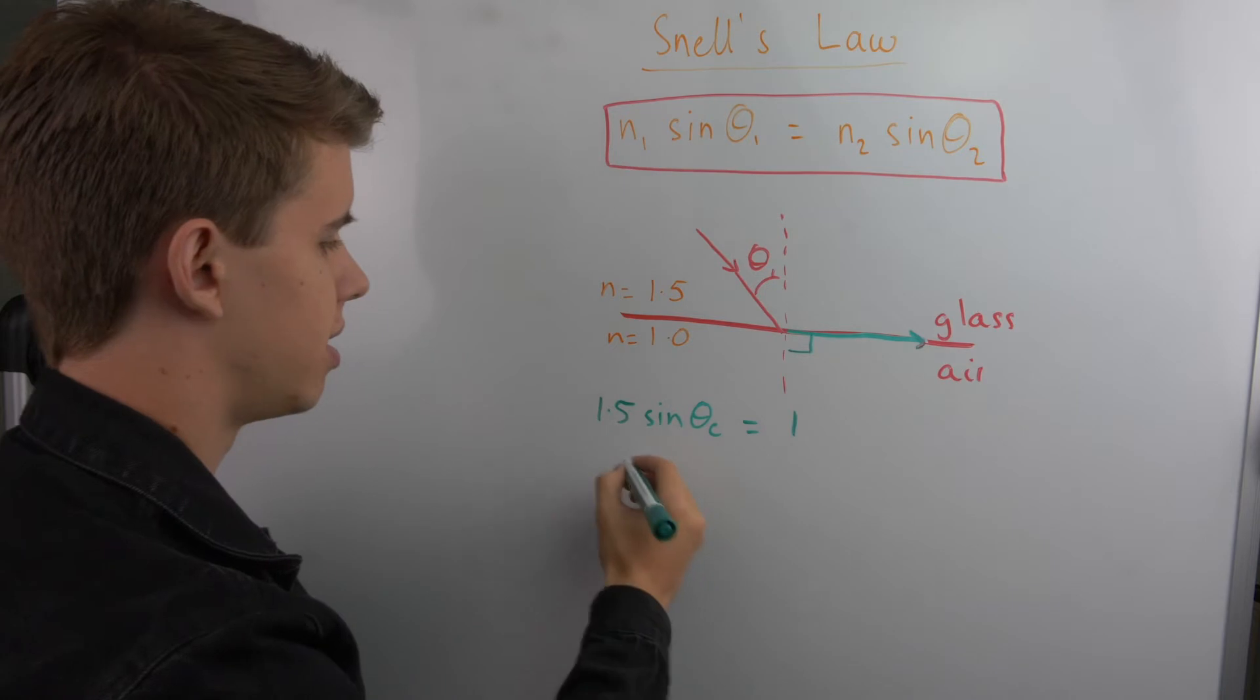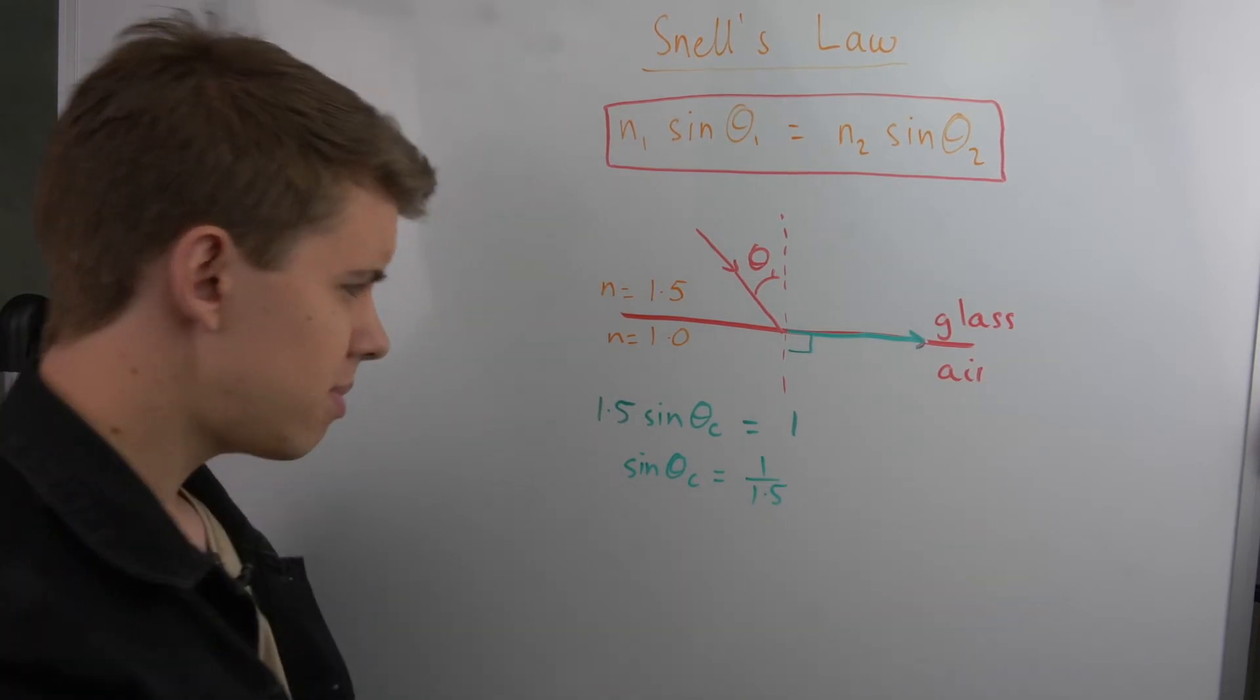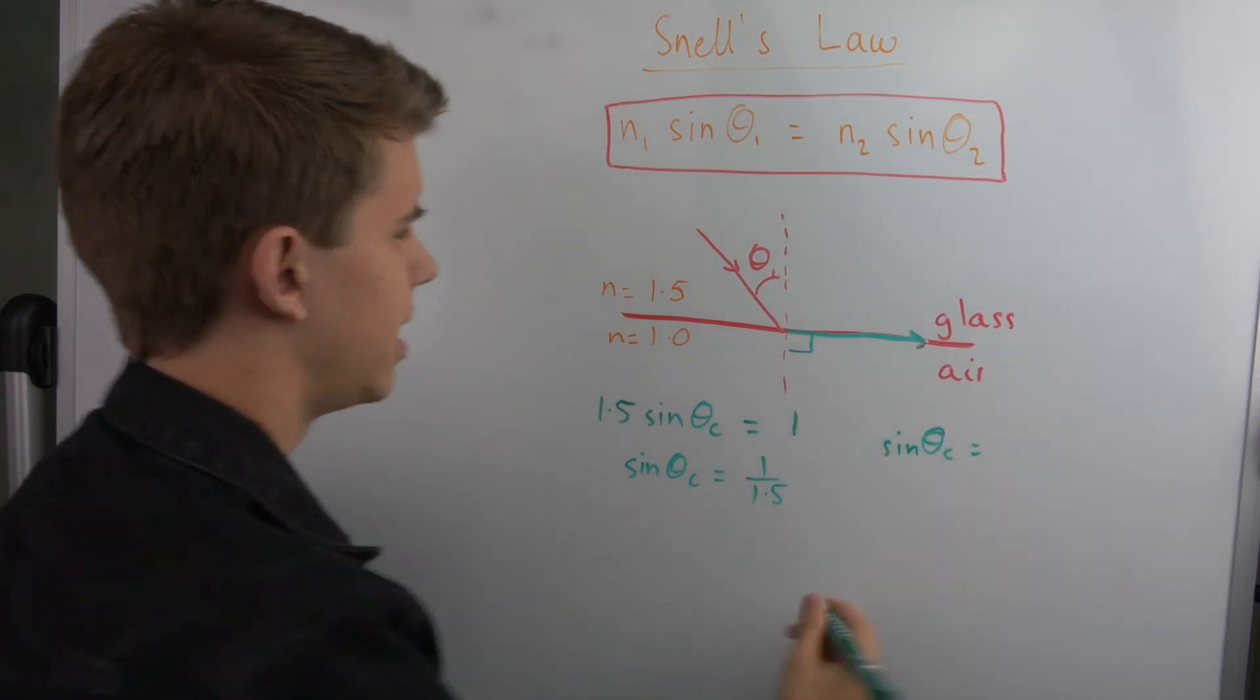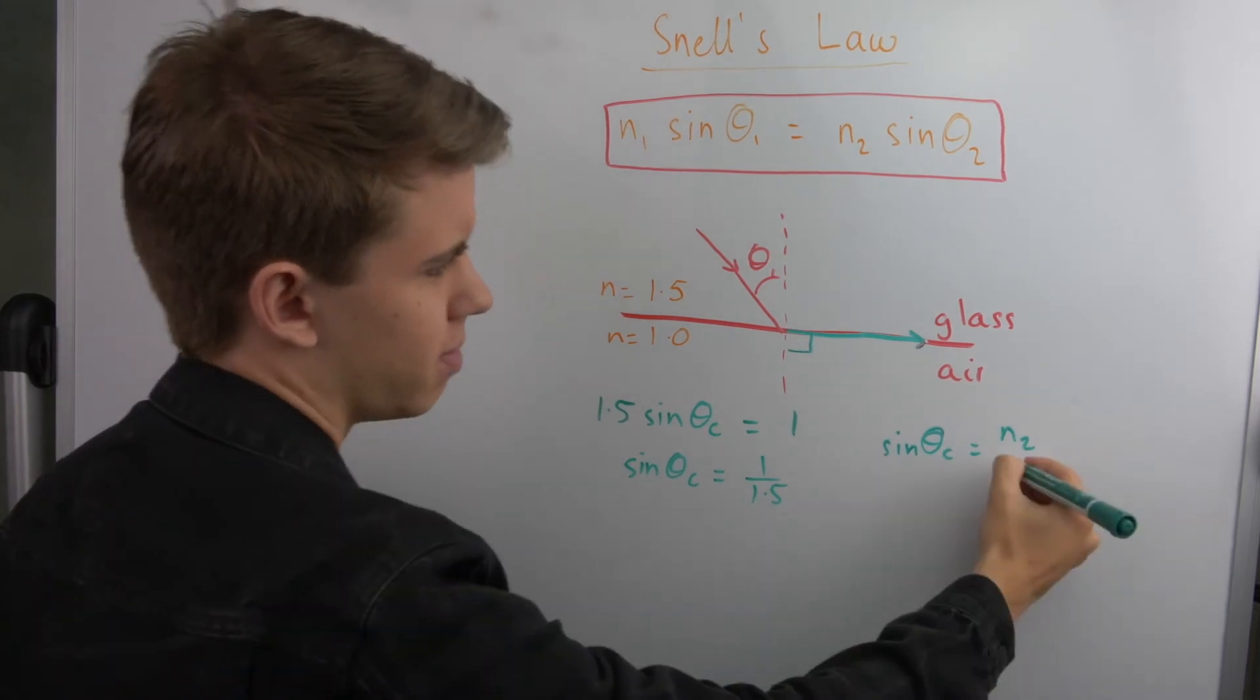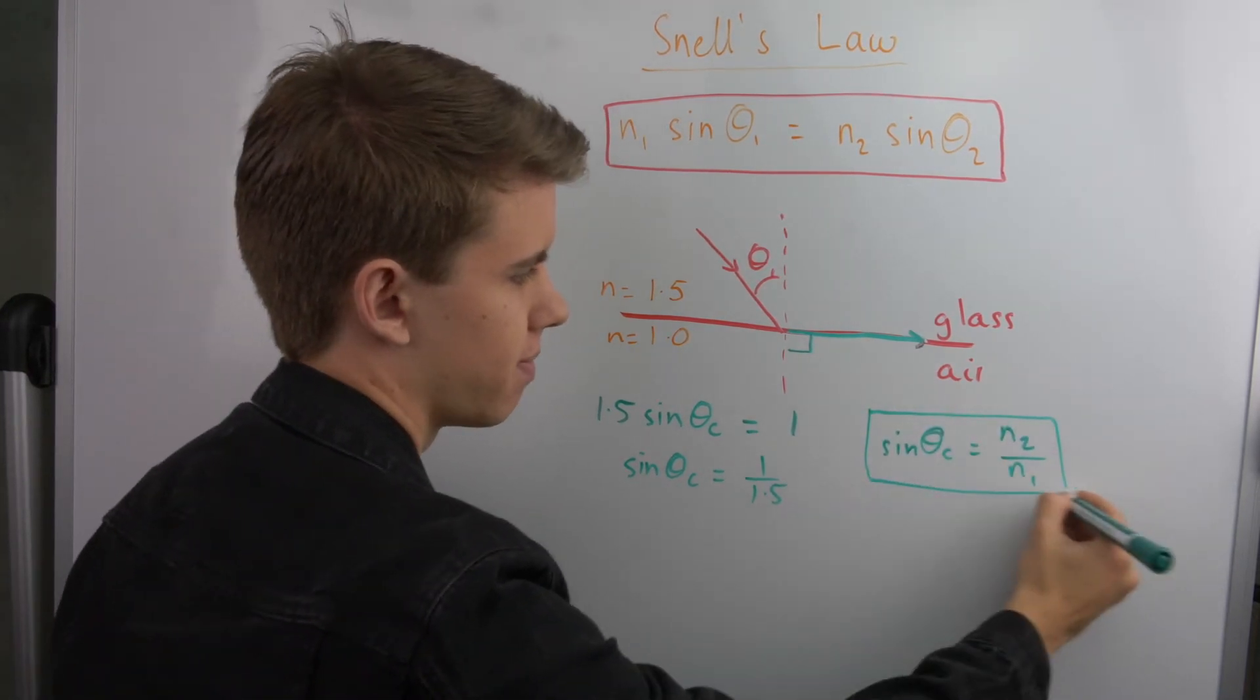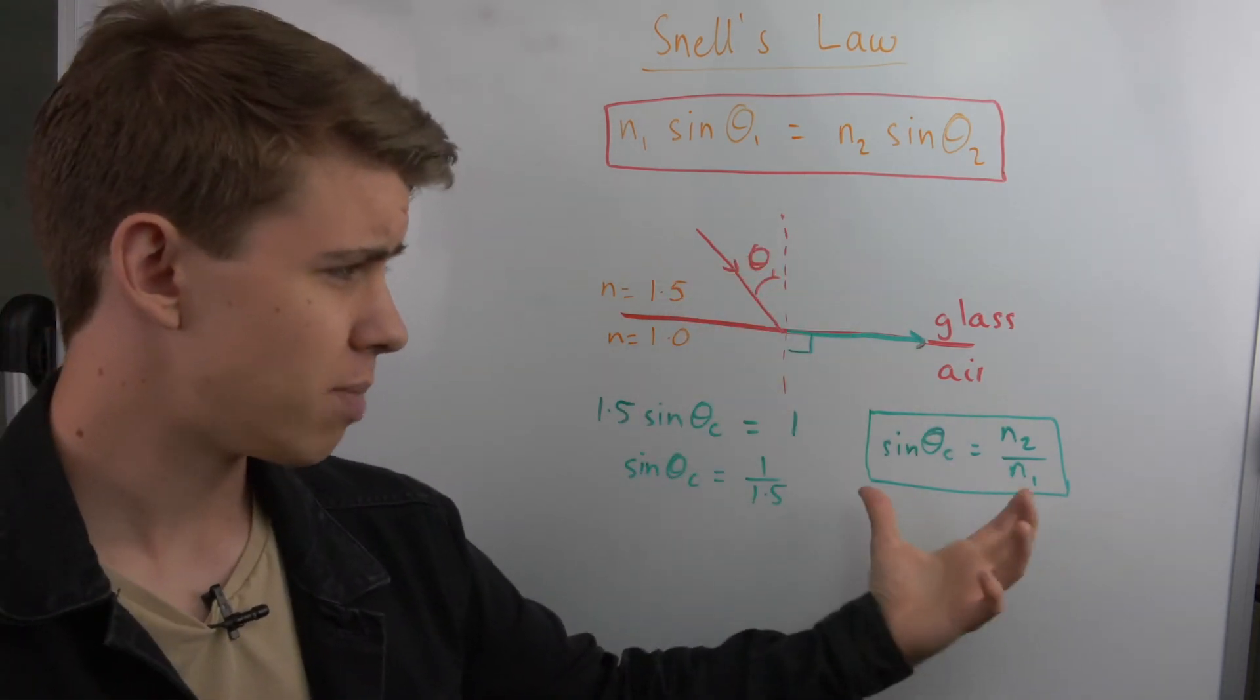So that means that 1.5 times sine of the critical angle will give you 1. And so then I can rearrange this, and in order to work out my critical angle, sine theta C must be equal to 1 over 1.5, which is what we've written here: that sine of the critical angle is the refractive index of my second medium divided by the refractive index of my first medium. And this equation shows up in your data sheet for AQA.